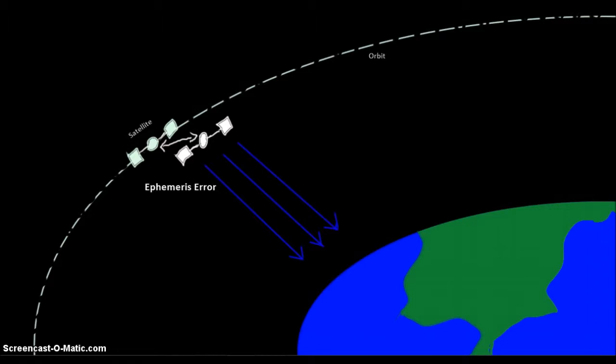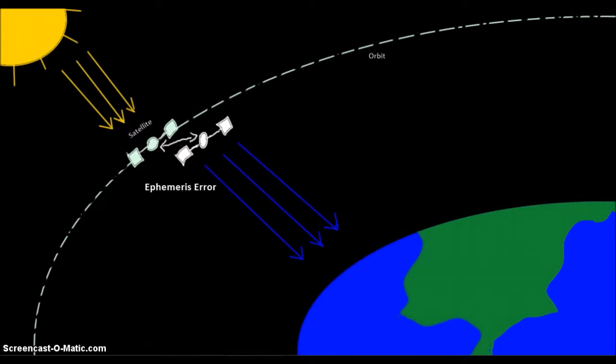Ephemeris errors are generally caused by gravitational pull, or solar radiation, that moves them out of their original orbit. The U.S. Department of Defense monitors each GPS satellite by radar and updates their positions every hour in an almanac.